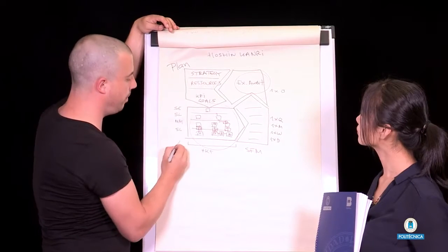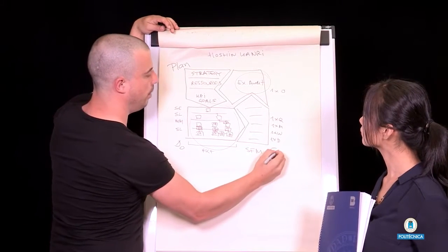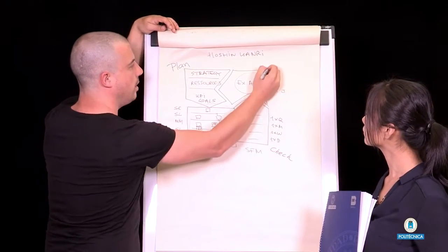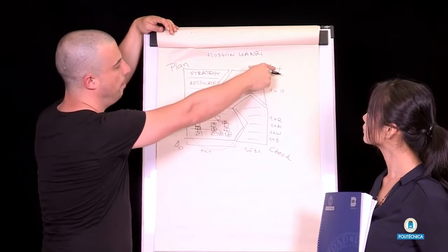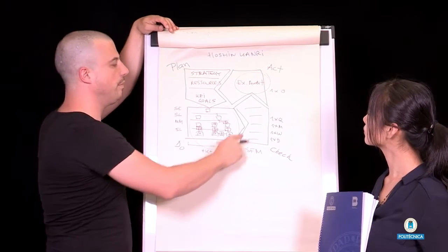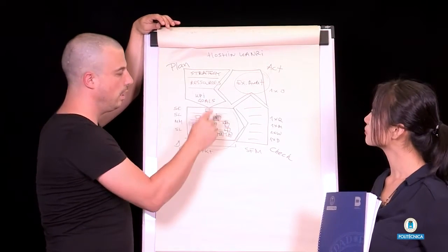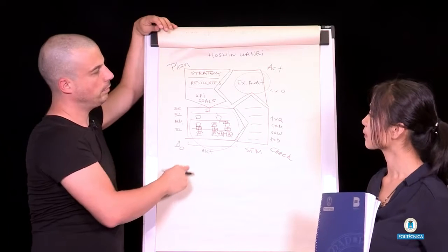So this is going to be a Hoshin-Kanri organizational approach in which this is going to be the plan, this is going to be the do, this is going to be the check, the shop floor management, and this is going to be the act. So as you see, we have a PDCA based upon a bunch of PDCAs in the shop.